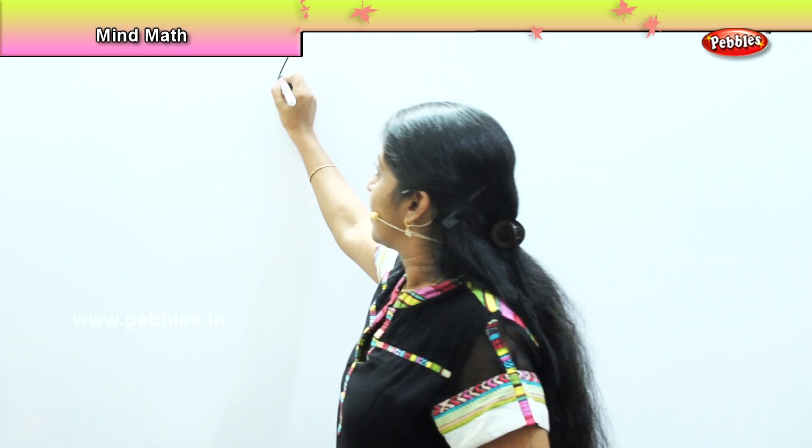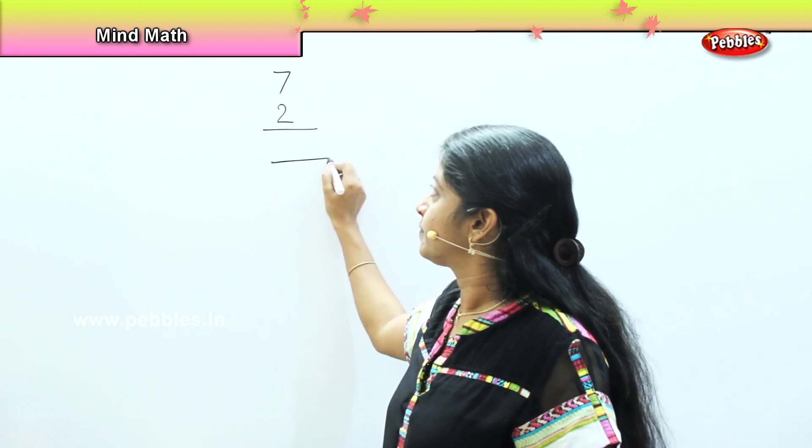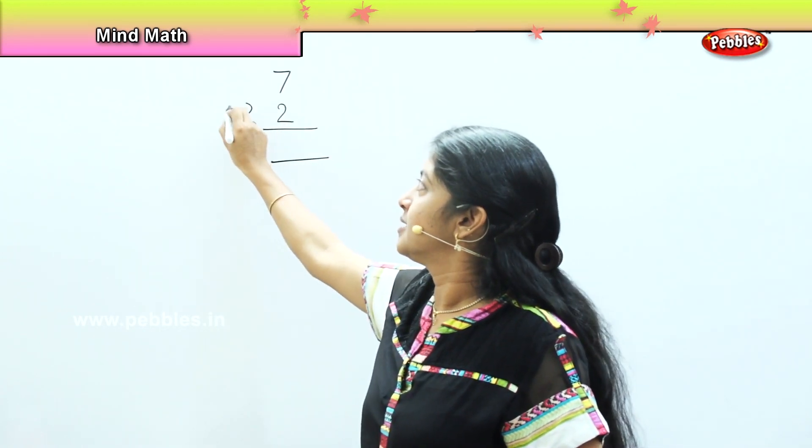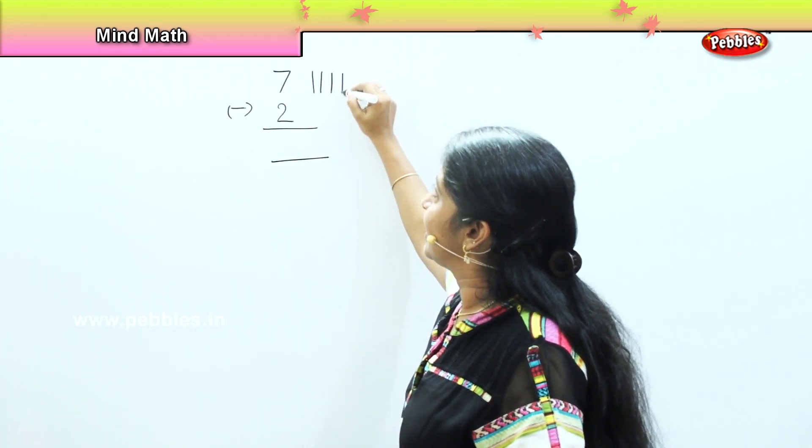We enjoyed learning various methods of subtraction, and now we will be doing a mental math game. I will be asking you questions and you need to solve along with me. Here it goes: there is a girl called Pari and she bought seven bananas for herself. She was feeling very hungry and she ate two of them. So how many bananas were remaining with her? What we need to do is first draw seven bananas.